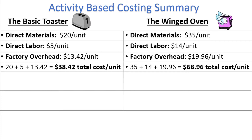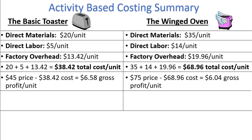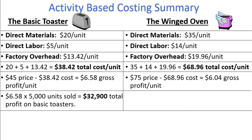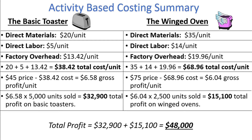The price of a basic toaster is $45, so the per unit gross profit is $45 minus $38.42, giving us $6.58 gross profit per unit. The winged oven sells for $75 each — $75 minus $68.96 gives us $6.04 in gross profit per unit. The total profit is found by multiplying profit per unit by units sold: $6.58 times 5,000 basic toasters gives $32,900 in total profit, and $6.04 times 2,500 winged ovens gives $15,100. The combined total profit is $32,900 plus $15,100, which equals $48,000.